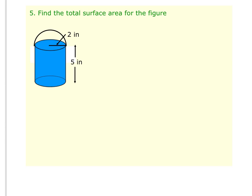Now if we're being asked to find the total surface area, keep in mind that that's like if we wanted to wrap this with fabric or paper. When we find surface area, we're actually not going to include this base, because we wouldn't wrap that with wrapping paper. We would wrap the sides of the cylinder, the bottom of the cylinder, and then the top of the hemisphere.